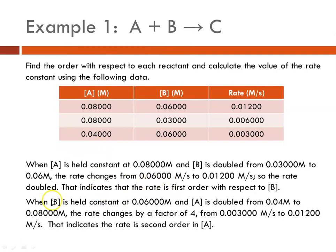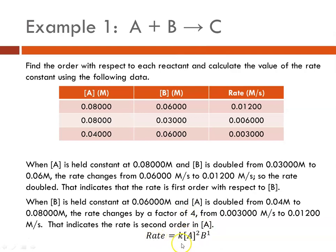Now looking at A: when B is held constant between the first and third experiments, and A is doubled from 0.04 to 0.08, the rate went from 0.003 to 0.012 — a factor of 4 increase. We doubled the concentration and the rate went up by 4, meaning it is second order in A. Doubling it — multiplying by 2 — gives 2 squared equals 4. So we write our rate equation as: rate equals K times A squared times B to the first power.